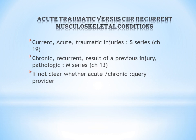Traumatic fracture is an acute, current fracture. Traumatic injuries should be coded as S series. These traumatic fractures are not covered under this chapter; they come under Chapter 19, S series.